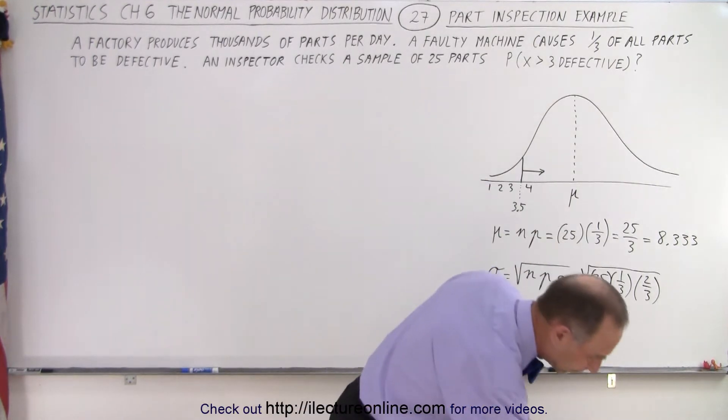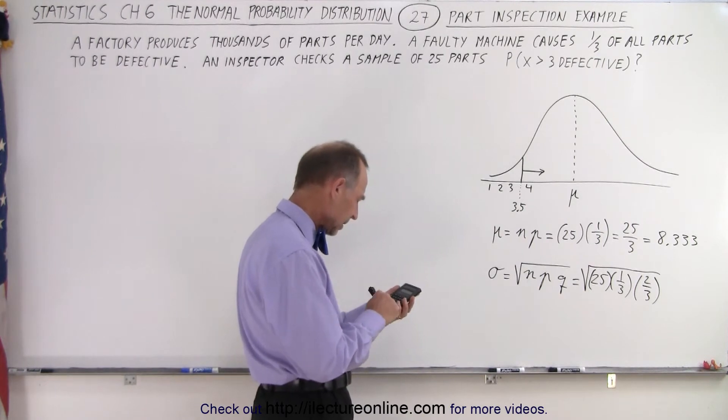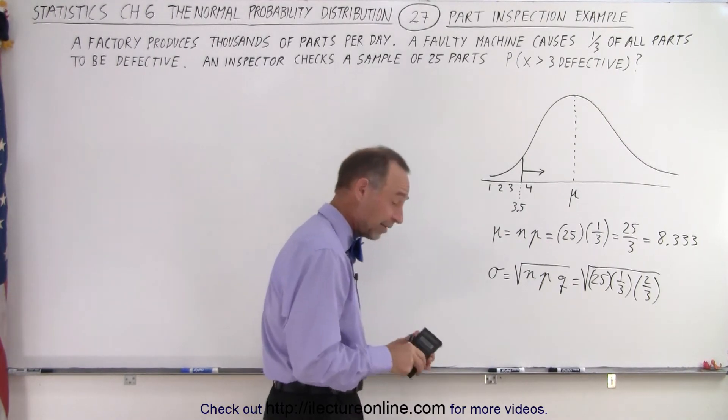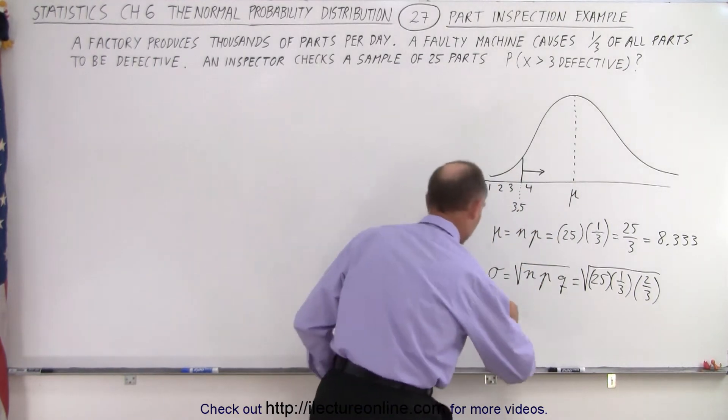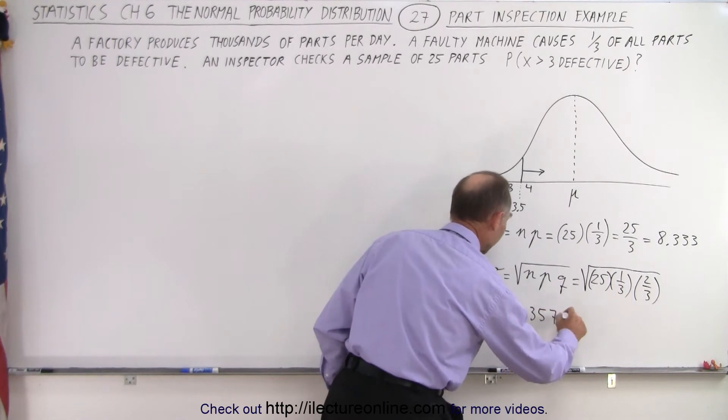All right, for that I'm going to need a calculator. So we have 50 over 9, take the square root, we get 2.357. So sigma equals 2.357.